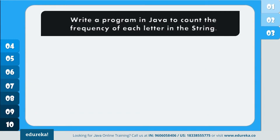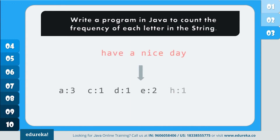The next program says: write a program in Java to count the frequency of each letter in the string. In this program you have to check the frequency of the characters present in the given string. For example, given the statement 'have a nice day', it has to display the frequency — the occurrence of 'a' is 3, 'c' is 1, 'd' is 1, 'h' is 1, and so on. Let's take a look at the code.